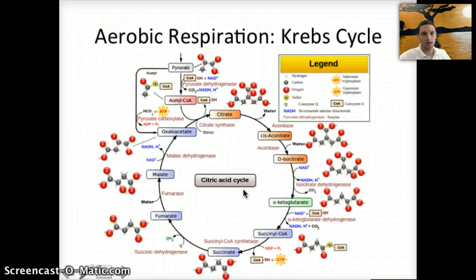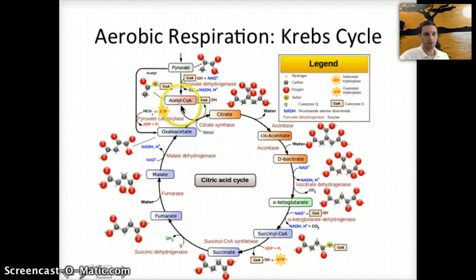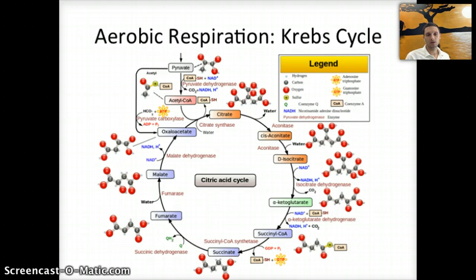Now let's take a closer look at the Krebs cycle. It is quite the multi-step reaction — there are lots of different things occurring, lots of different enzymes being used. It's another example of a metabolic reaction, and this diagram obviously makes it look very confusing with a lot of steps. But we can simplify it. What is occurring in this process is that, starting with the acetyl-CoA molecule, it is being manipulated in order to produce NADH.